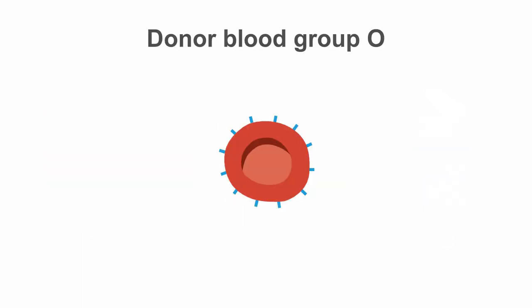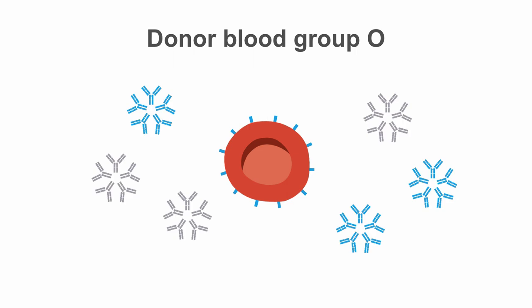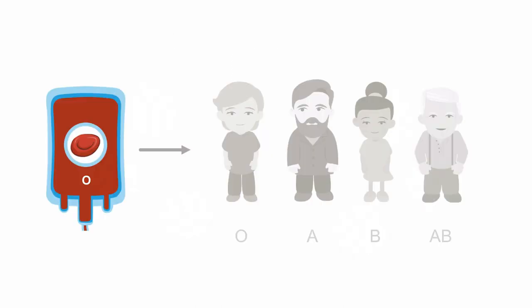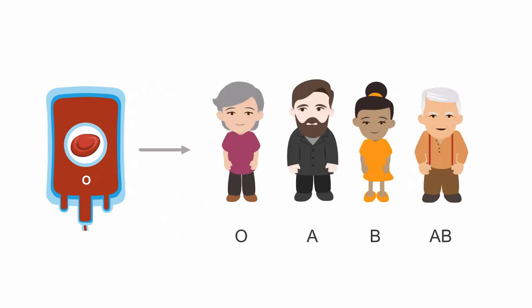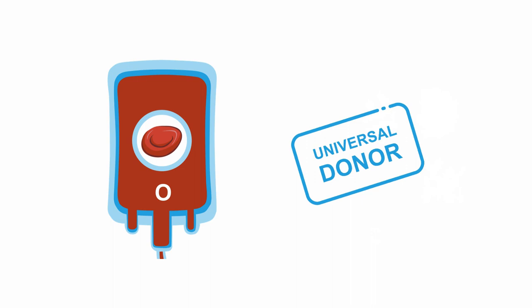And finally, blood group O. There is no A antigen or B antigen on the red blood cells. So even if there are antibodies in the recipient's plasma, they won't have anything to bind to on these RBCs. So you can give group O blood to patients of all ABO blood groups: O, A, B, and AB. For this reason, group O is the universal donor blood group for red blood cells and is used in life-threatening emergencies when there is no time to wait for blood typing.